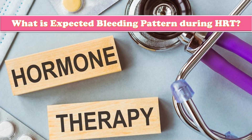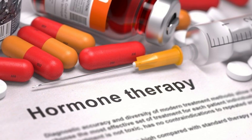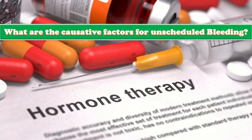Regarding expected bleeding patterns during HRT: the cyclic combined regimen produces regular and acceptable withdrawal bleeding after the end of the progesterone phase, but continuous combined therapy can have initial breakthrough bleeding and should induce amenorrhea within six months of therapy. Causative factors for unscheduled bleeding include forgotten pills, drug interactions, prolonged diarrhea, and other causes of postmenopausal bleeding.